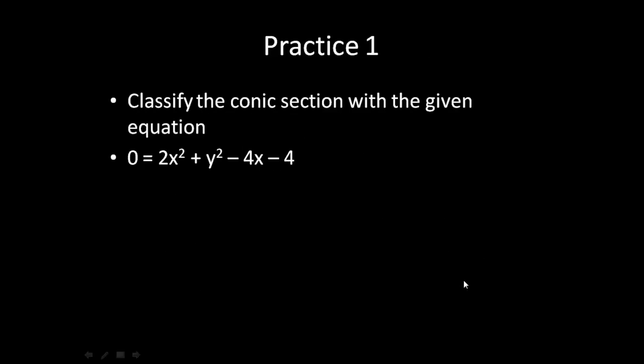So here's our first example. It says classify the conic section with the given equation. We have zero equals 2x squared plus y squared minus 4x minus 4. Now, the first thing you have to realize is it does have to be equal to zero in order to use the discriminant. The next thing we have to do is figure out what is b squared minus 4ac.